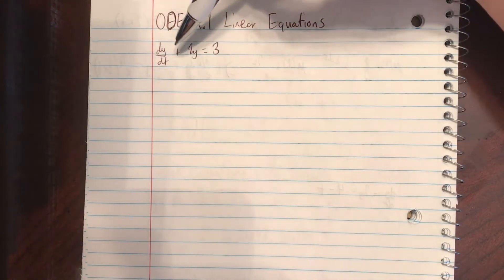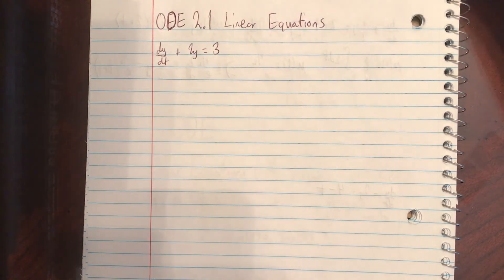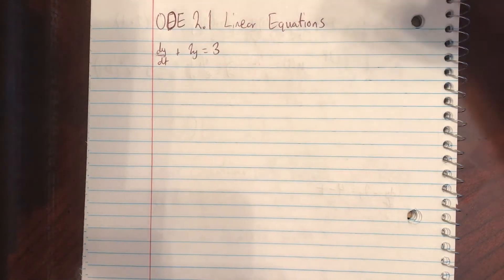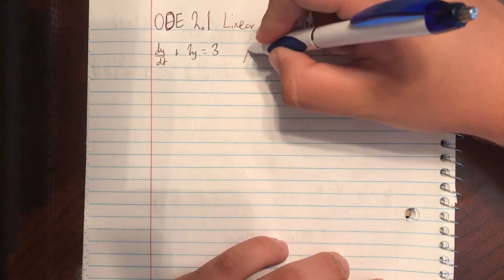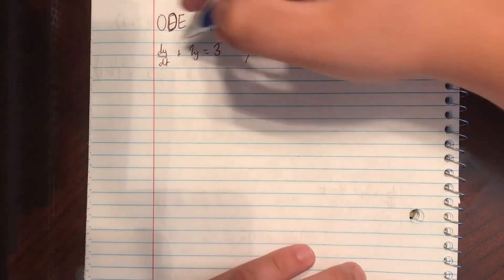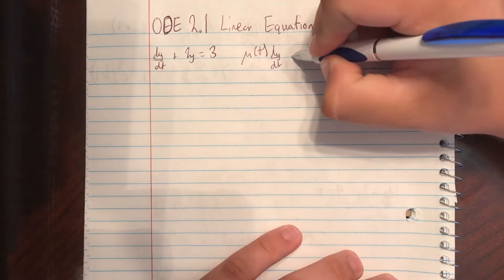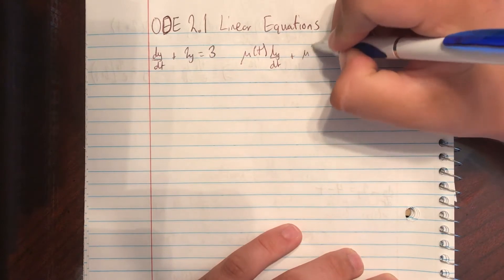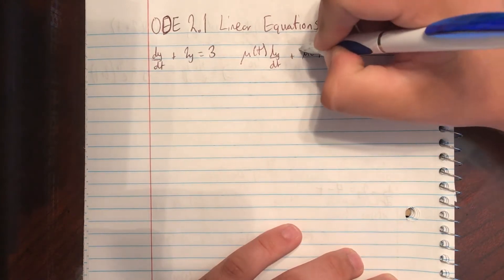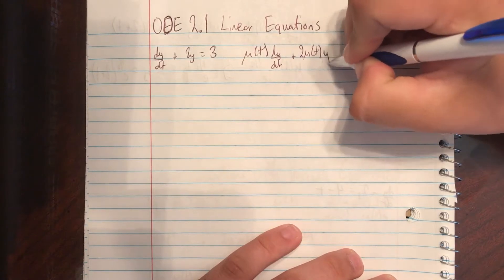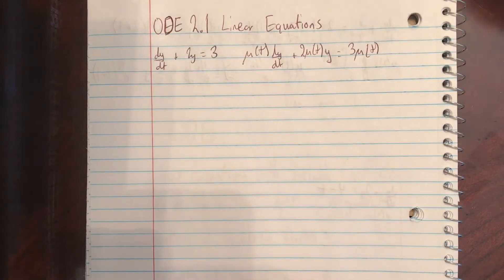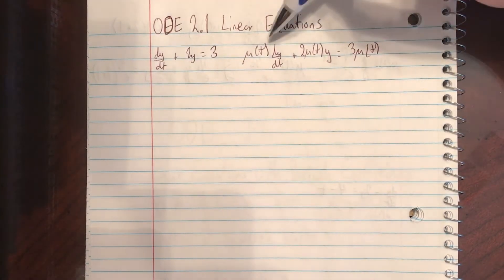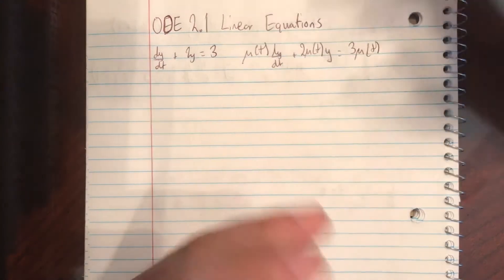You just have to move the mu of t over to this side through division after integrating to find your solution. So in this case, we have dy/dt plus 2y is equal to 3. So we're actually going to multiply everything by some function called mu of t, because we know this isn't separable. So we're going to have mu of t times dy/dt plus mu of t times 2 times y is equal to 3 mu of t. And the goal is to have this left side be equal to some product rule.